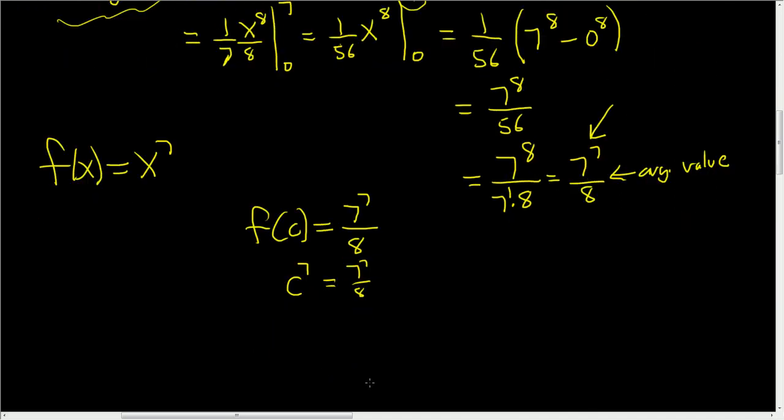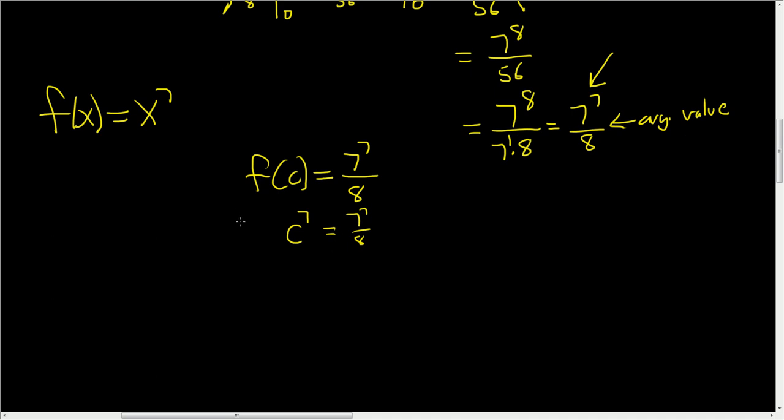And to solve this equation, you simply take the 7th root. So if you take the 7th root of c to the 7th, and you take the 7th root of 7 to the 7 over 8, so you get c equals, well, the 7th root of 7 to the 7 is 7. And on the bottom, you just get the 7th root of 8. And that is the final answer. I hope that made sense.